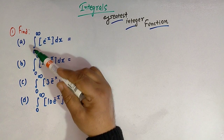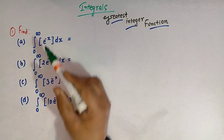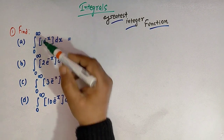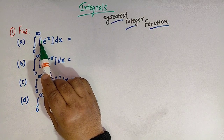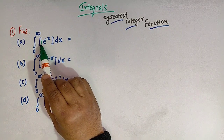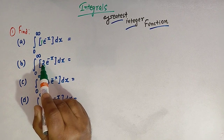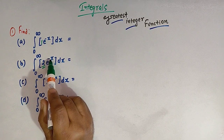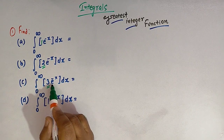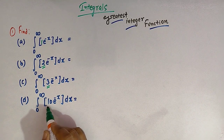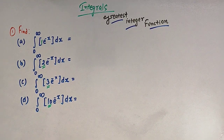In the first integral, we have 0 to infinity of the greatest integer of e raised to minus x, where 1 is the natural number multiplied with e raised to minus x. In the second integral, we have 2 as the natural number multiplied with e raised to minus x. In the third integral, we have 3, and in the fourth integral, we have 10 as the natural number multiplied with e raised to minus x.